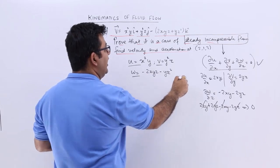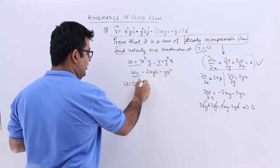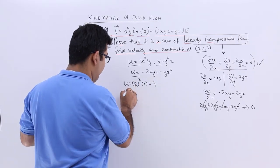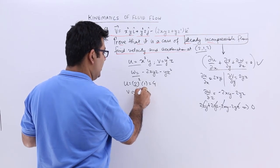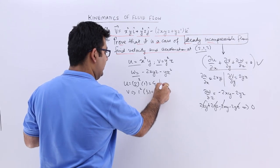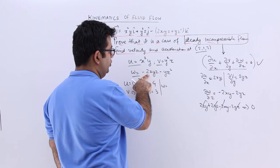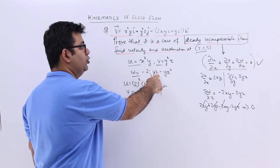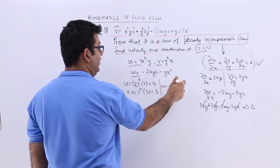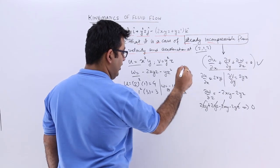So when you have to find out u, you will get 2² × 1 = 4 units. Then v would be 1² × 3 = 3 units and w will be -2 × 2 × 1 × 3 - 1 × 3² = -12 - 9 = -21 units.